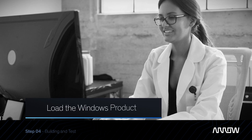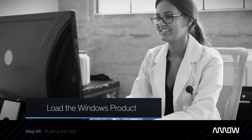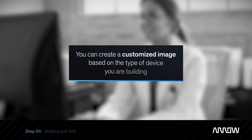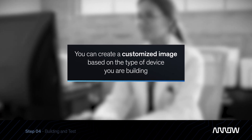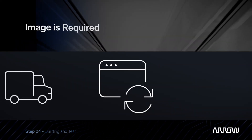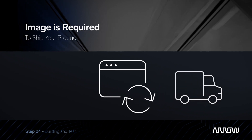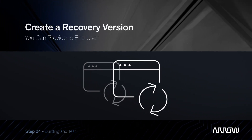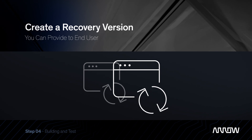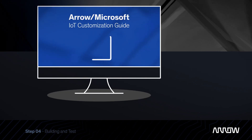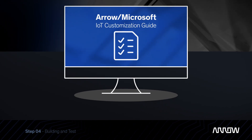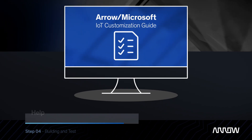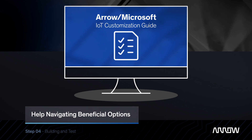Load a test unit with the Windows product. Using the software obtained in Step 2, you will be able to create a customized image based on the type of device you are building. This image is required to ship your product. Test the image and even create a recovery version that you can provide to your end user, if preferred. Request the Aero Microsoft IoT customization guide to help navigate the many beneficial options.